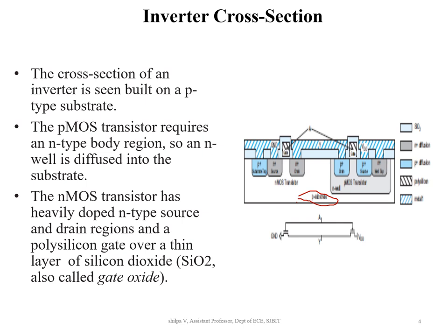The polysilicon gates of these two transistors are tied together to form the input A. The source of pMOS is connected to metal line VDD, and the drains of the two transistors are connected with metal to form output Y.